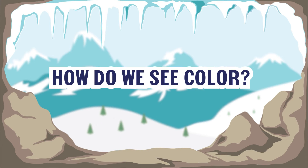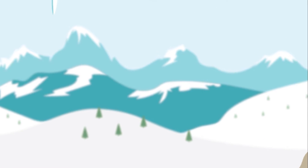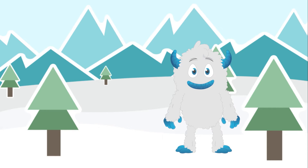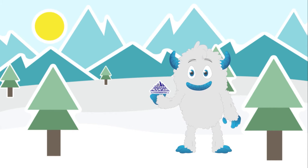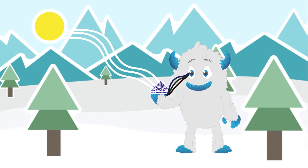So how do we see color? Marty, our big friendly yeti, will be our guide on how we experience color. Color is the result of three key things: light, an object, and our eyes. Light produces wavelengths that bounce off an object and either absorb or reflect certain wavelengths back into our eyes when we experience a particular color.